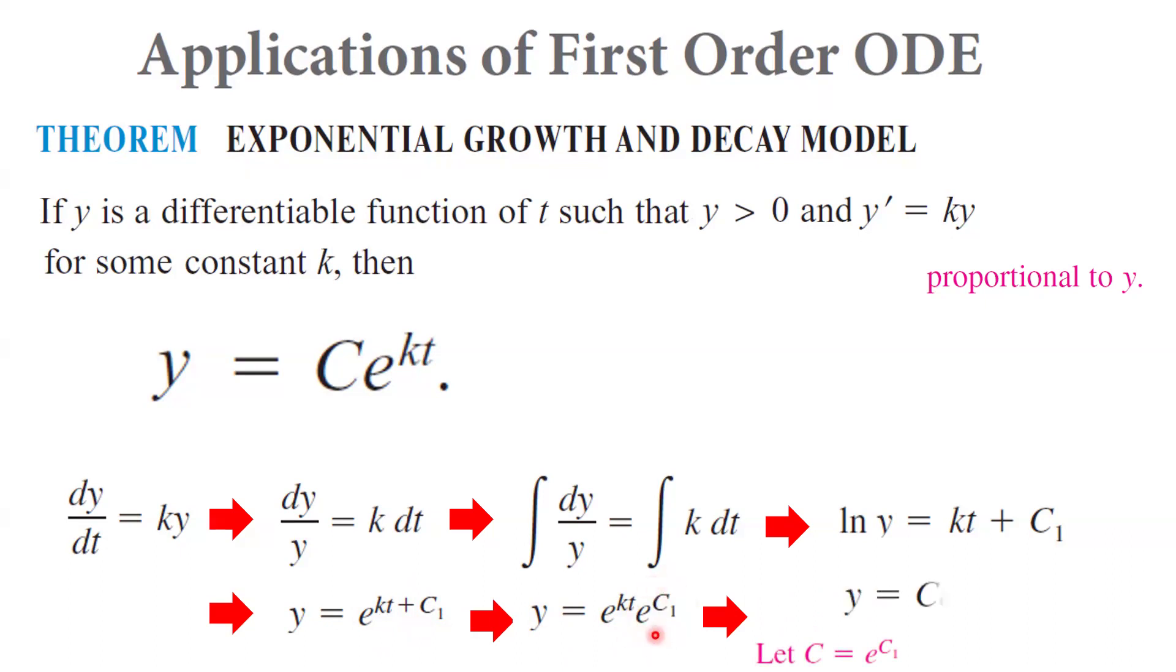Taking c to be e to power c sub 1, which is a constant, y becomes c e to power kt. So that's how we get this mathematical model from this separable differential equation.